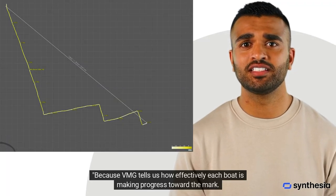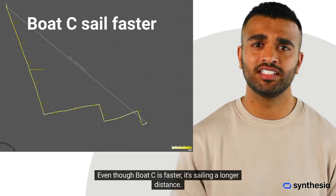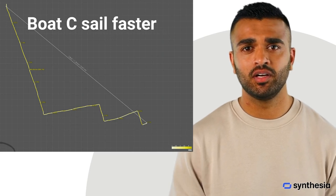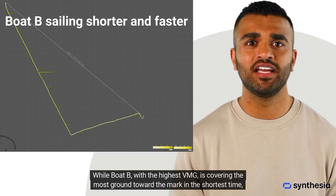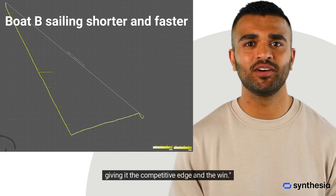Because VMG tells us how effectively each boat is making progress toward the mark. Even though Boat C is faster, it's sailing a longer distance. While Boat B, with the highest VMG, is covering the most ground toward the mark in the shortest time, giving it the competitive edge upwind.